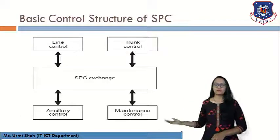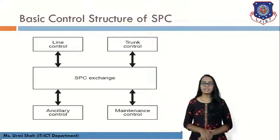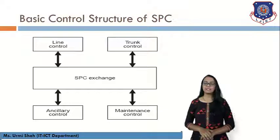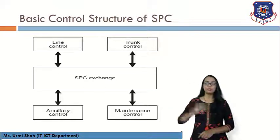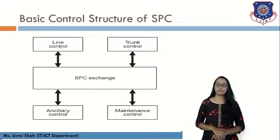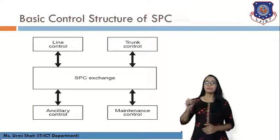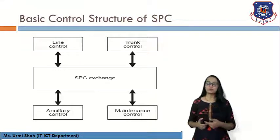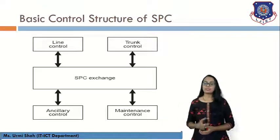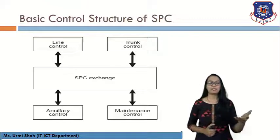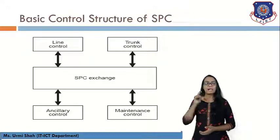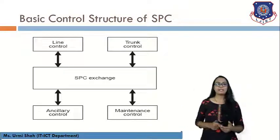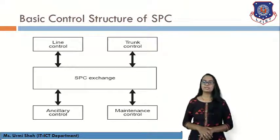This is the structure of stored program control. In an SPC exchange we have four features connected with bi-directional lines: ancillary control, maintenance control, trunk control, and line control. Line control manages the path between the called person and the calling subscriber. Ancillary control manages the path connected between the two persons. Maintenance control verifies whether an established path is maintained for a certain duration. Trunk control initiates the dialing part.